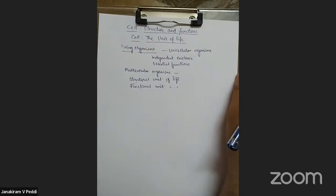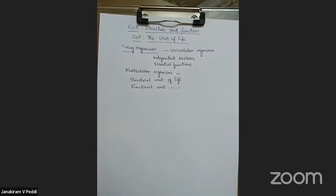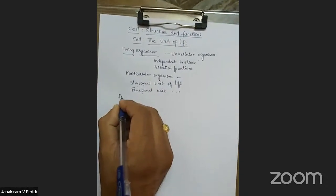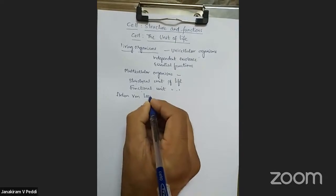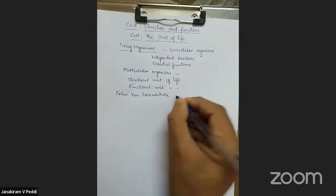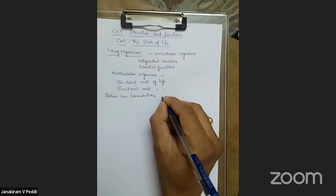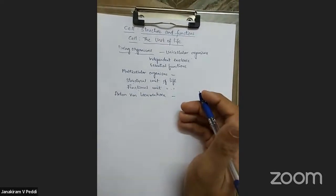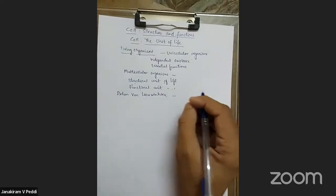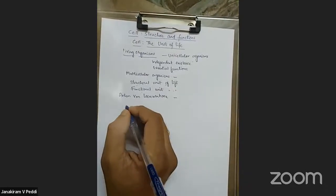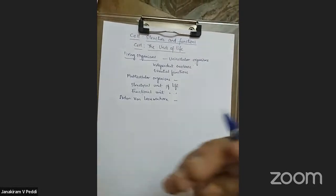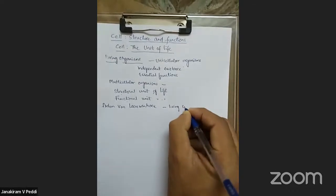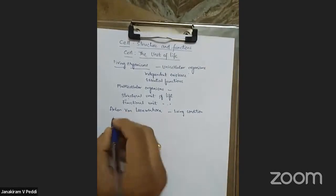Regarding the discovery of cells, the first scientist who discovered the cell is Robert Hooke, along with Leeuwenhoek. When scientists first discovered cells, they appeared as empty spaces, and the name 'cell' was given based on those empty spaces observed inside the structures. Later, many scientists came to know about the living condition of cells.